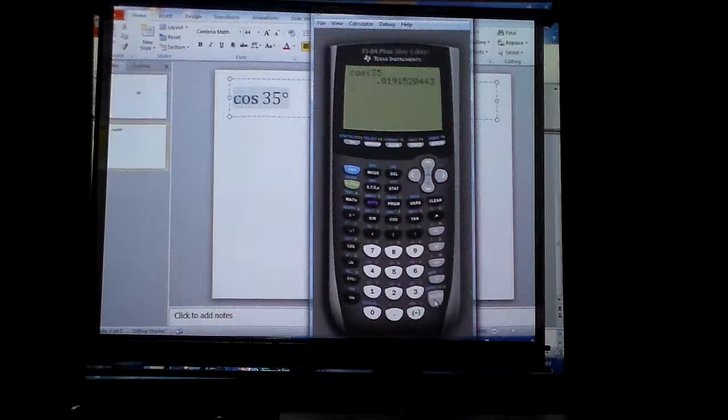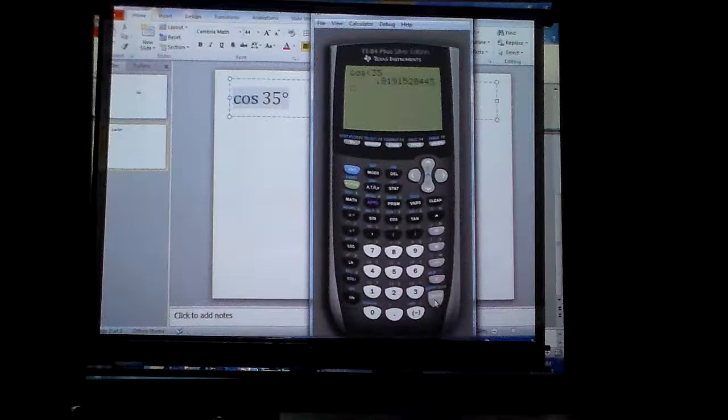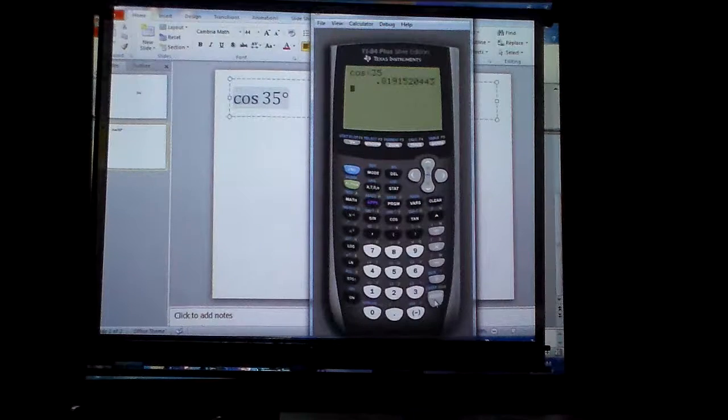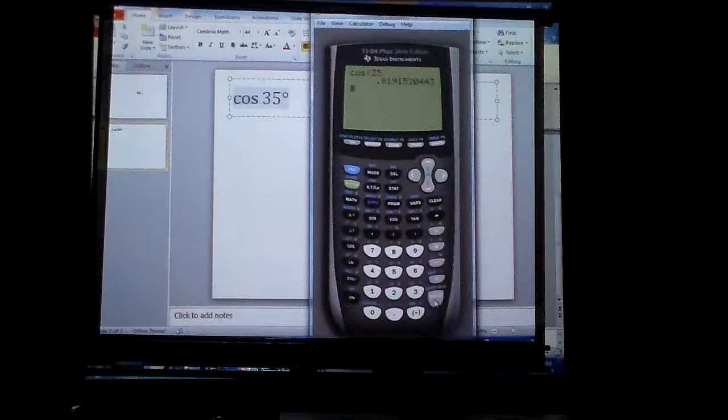And the answer to cosine of 35 degrees is 0.819, and 2 if you round it. You can see the 1, 5, but a lot of times we'll go ahead and round those numbers.